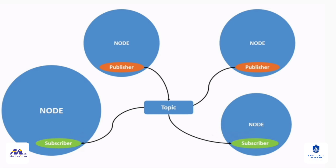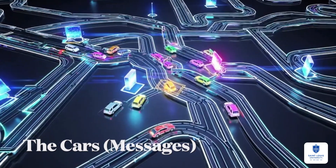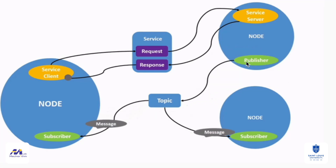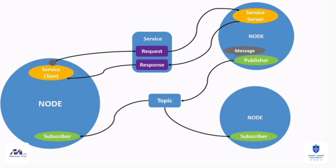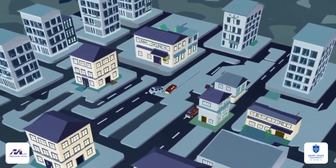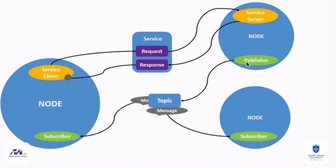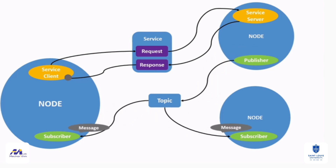On these roads, we observe cars transporting cargo. These cars are the messages — structured packets of data with defined types. One message may contain a two-dimensional laser scan, another an RGB image, another a velocity vector. Messages are the medium through which knowledge flows across the system. Some buildings release cars into traffic — these are the publishers. Others receive them at their gates — the subscribers. A camera node, for example, publishes image data, while a perception node subscribes, consuming those images.